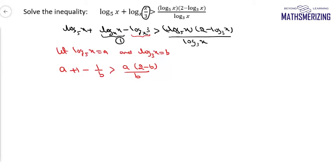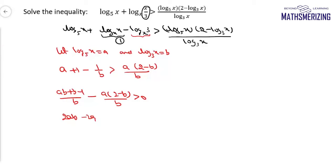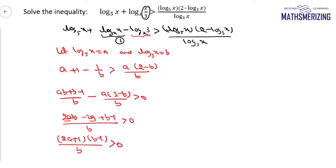I'll take everything on the left hand side. So I'll write ab plus b minus 1 upon b, and minus a, 2 minus b upon b, and it should be greater than 0. Taking 2a common, I can factorize it as 2a plus 1, b minus 1, and b, all greater than 0.